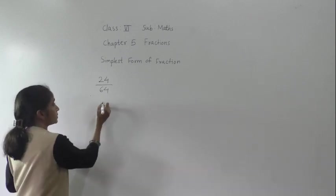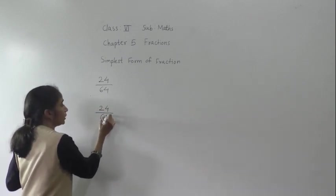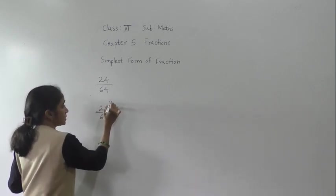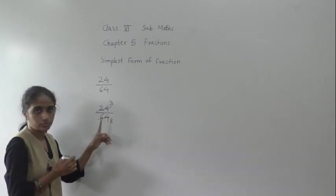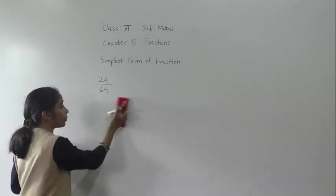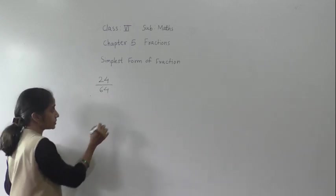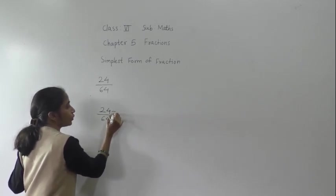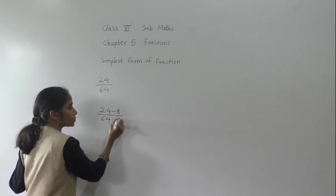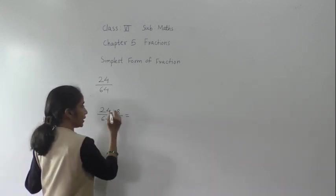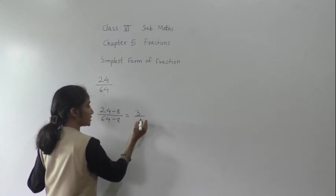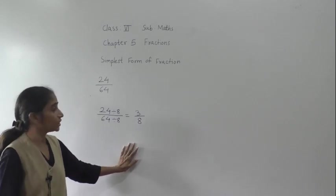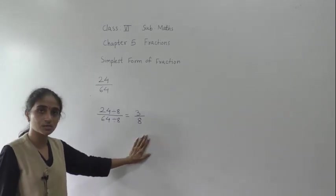Some students understand directly: both numbers come in the 8 table — 8 threes are 24, 8 eights are 64 — so they directly write 3 upon 8 as the simplest form. So for 24 upon 64, dividing both by 8 gives 3 upon 8. We have two or three methods to find the simplest form.